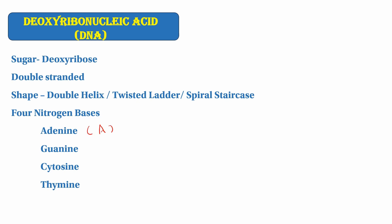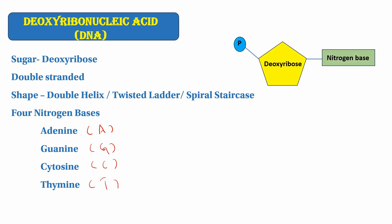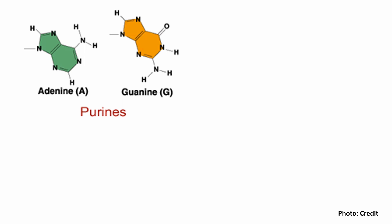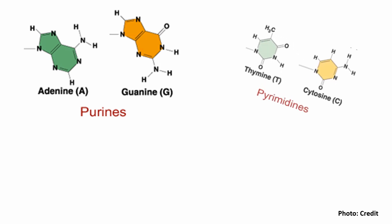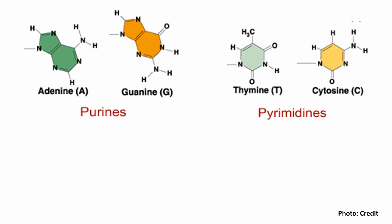Abbreviations are used: cytosine is abbreviated as C, thymine as T. In ribonucleic acid, the sugar carbons are numbered 1, 2, 3. Deoxyribose sugar differs from ribose sugar by the oxygen group. Adenine, guanine, cytosine, and thymine are the nitrogen bases. Adenine and guanine are double-ring structures called purines, while cytosine and thymine are single-ring structures called pyrimidines.